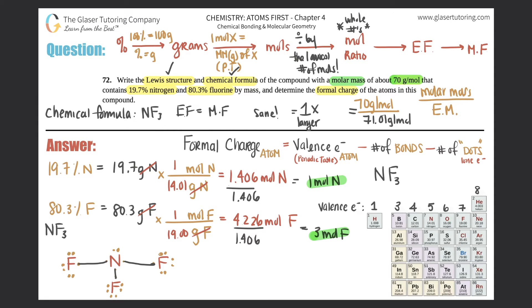So now we drew the Lewis structure, we know the chemical formula, and now we just have to determine the formal charge. Each fluorine is exactly the same, so if I can determine the formal charge of one fluorine, I will know the formal charge for all of them.